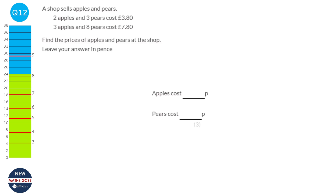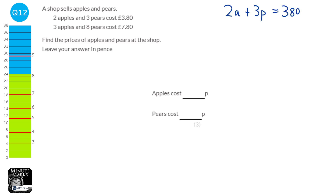This question is a simultaneous equations question, so we're going to write down some equations. Two apples and three pears cost £3.80, so 2A plus 3p equals 380 pence — using pence because it's easier to work with integers. And three apples plus eight pears cost £7.80, so 3A plus 8p equals 780 pence.